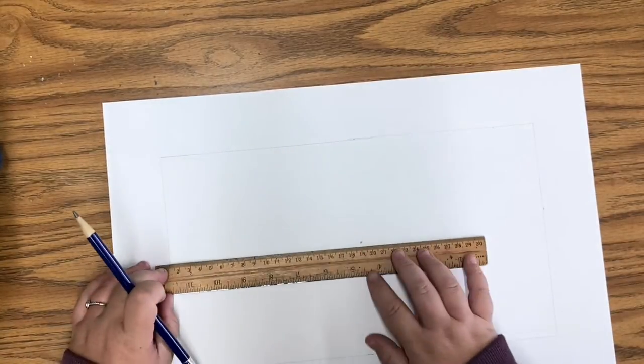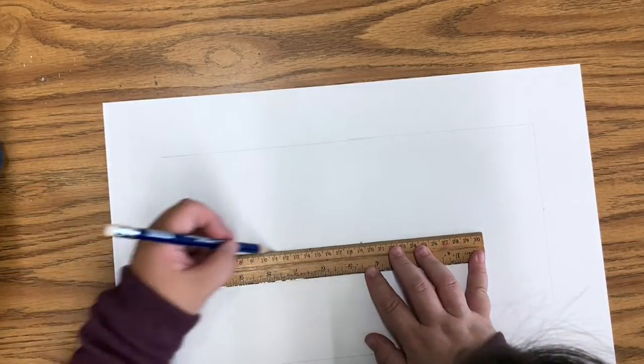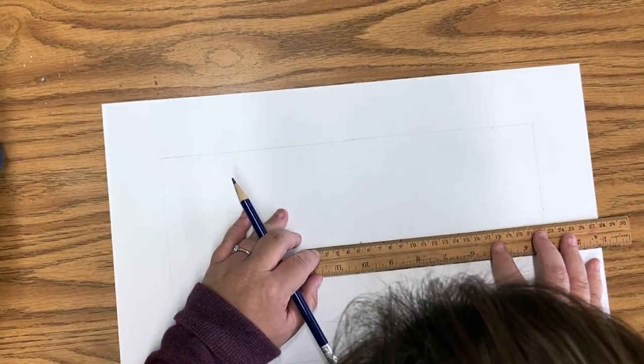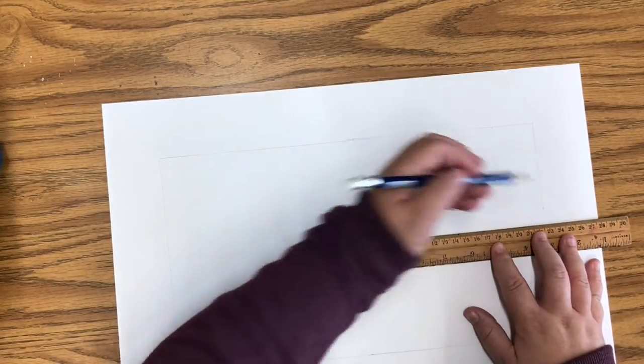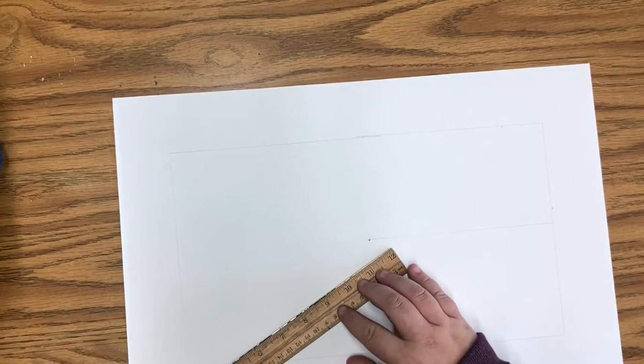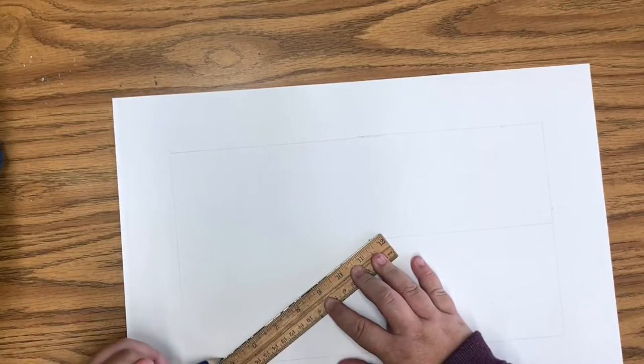Now that I have my vanishing point, I'm going to use my ruler to draw the horizon line. The horizon line is a fancy name for the line that divides the sky from the ground. This will only be done on the part of your window that shows the outside, so just inside the frame.